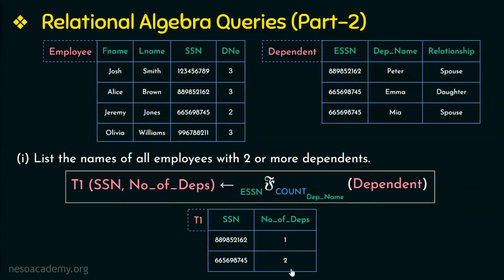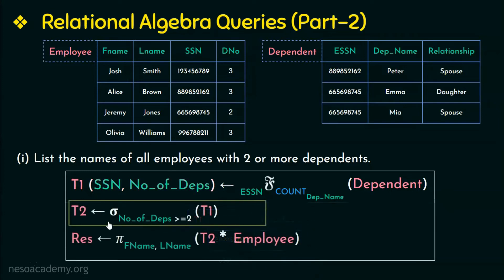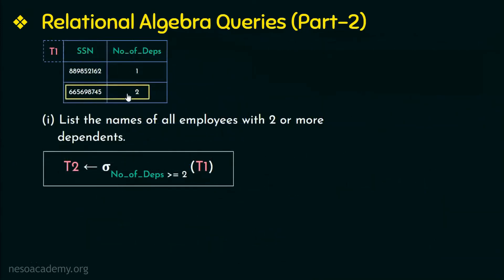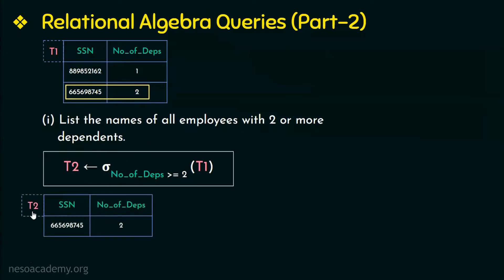Now that we have the count of dependents for each employee, we can find out which employee has two or more dependents. We do this by selecting those tuples from T1 where the number of dependents is greater than or equal to 2. Here we clearly see that there is only one tuple having the number of dependents greater than or equal to 2, so that tuple is selected and stored in relation T2.